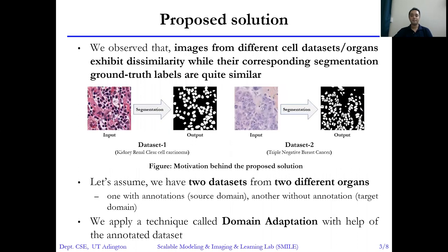So what is the solution? We carefully observed that the cell segmentation outputs are domain invariant, as you can see in the figure. We assume that we have two domains: a source domain in which we have annotations, and a target domain in which we don't have any annotations. We apply a technique called domain adaptation with the help of the annotated dataset.